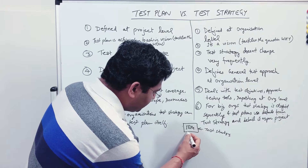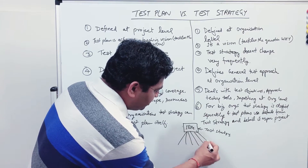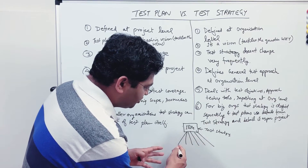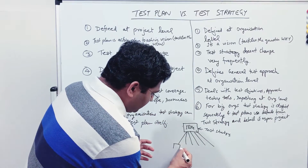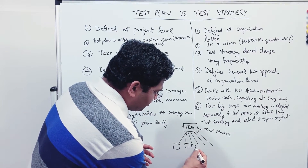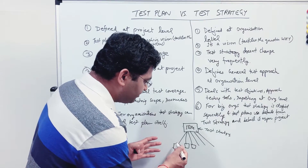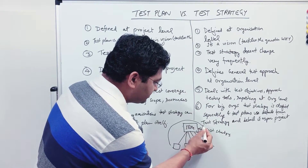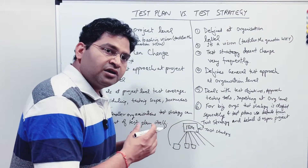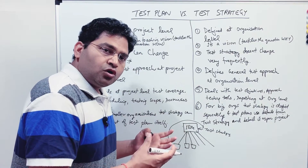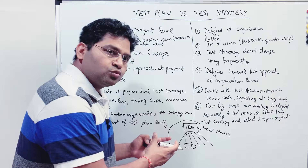In this organization — IBM — there will be multiple projects. When these projects approach testing, what they'll do is refer to the test strategy at the org level. They'll look at what test management tools they can use and how defects should be tracked.